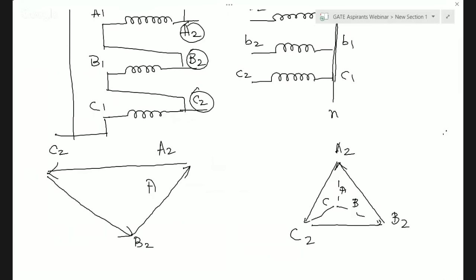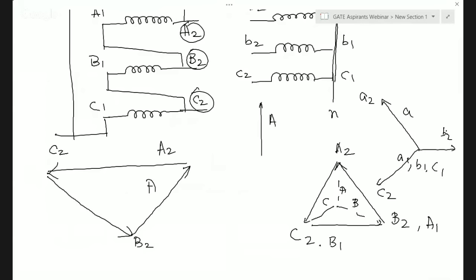In the secondary, draw A1 to A2 parallel to the primary A1 to A2. Since A1 is identical to B2, draw accordingly. B1 to B2 will be horizontal, and C1 to C2 follows. Comparing the A phase of the primary and the A phase of the secondary, you can see the secondary is leading by 30°. So the phase shift is 30° lead. The procedure is: draw primary phasors, draw secondary phasors parallel to primary phasors, then calculate the phase difference.